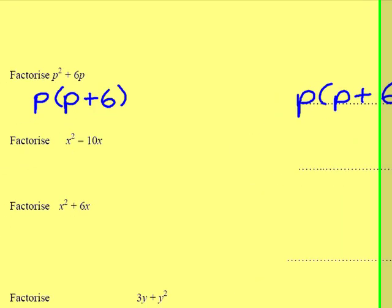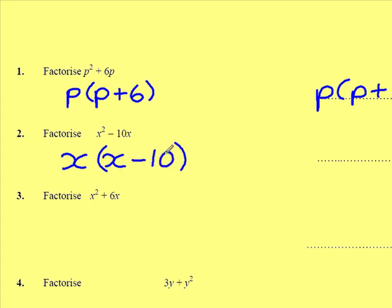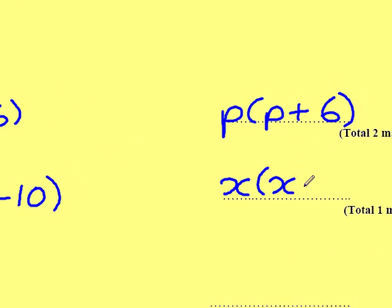Question 2. Factorise x squared minus 10x. Once again, there's a letter in both of those that can be factored out, which will be x. x multiplied by x will give me the first term x squared, and x multiplied by minus 10 will give me the second term minus 10x. So, in factorised form, that would be x times x minus 10 in brackets.